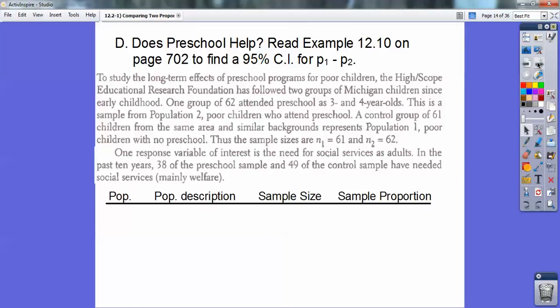So we're going to go ahead and set up our population chart right here. My first one is the control group, which is the no preschool kids, and so 49 of them had needed social services. So here I have 49 over the total 61, so over 80% of them needed social services. And then the second group, preschool, 38 out of 62, so 61% of those guys needed social services.